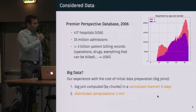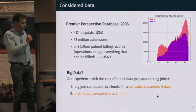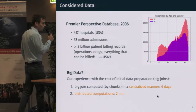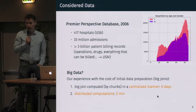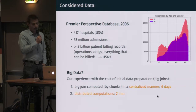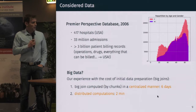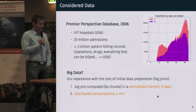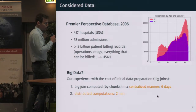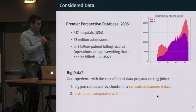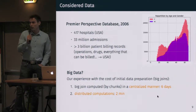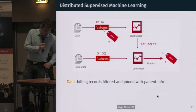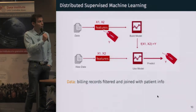One legitimate question is: is that big data? I don't have a formal definition for big data, but I can speak to our experience with the cost of the initial data preparation. To prepare data for further analysis we had to compute big joins. At first we tried to compute those joins in a centralized manner, on a single server, and we finally stopped the computation after a few hours because the total time for completion was around 6 days. Whereas with a distributed algorithm, the total computation time was around 2 minutes. This is the reason why we use a distributed architecture.